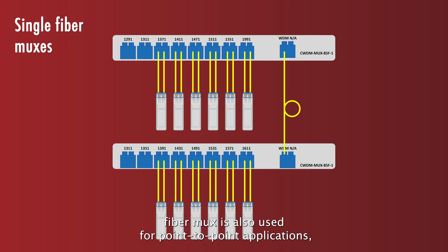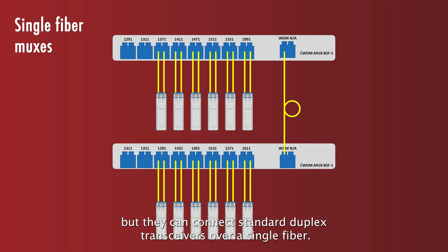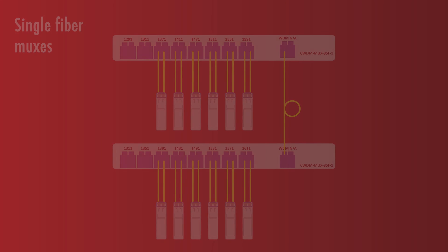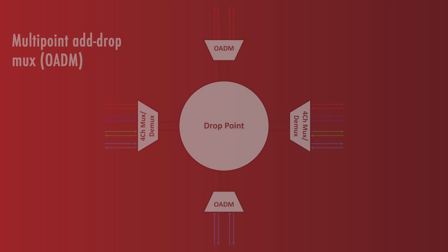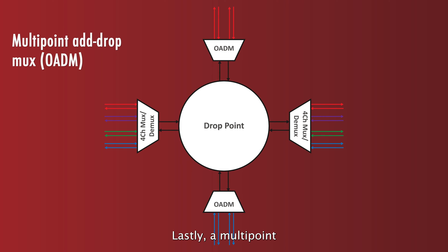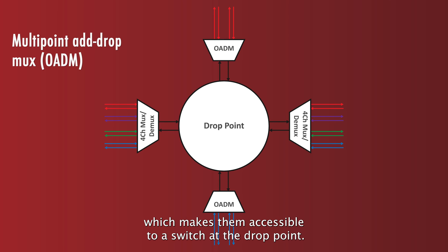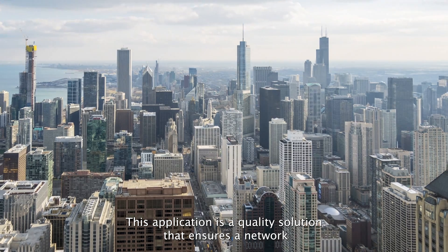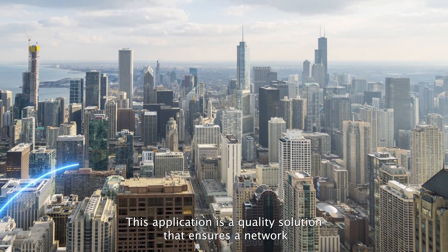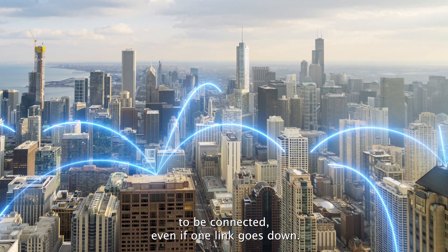A single fiber MUX is also used for point-to-point applications, but they can connect standard duplex transceivers over a single fiber. Lastly, a multipoint optical add-drop MUX can filter up to four WDM wavelengths off of a single WDM link, making them accessible to a switch at the drop point. This application is a quality solution that ensures the network remains connected, even if one link goes down.